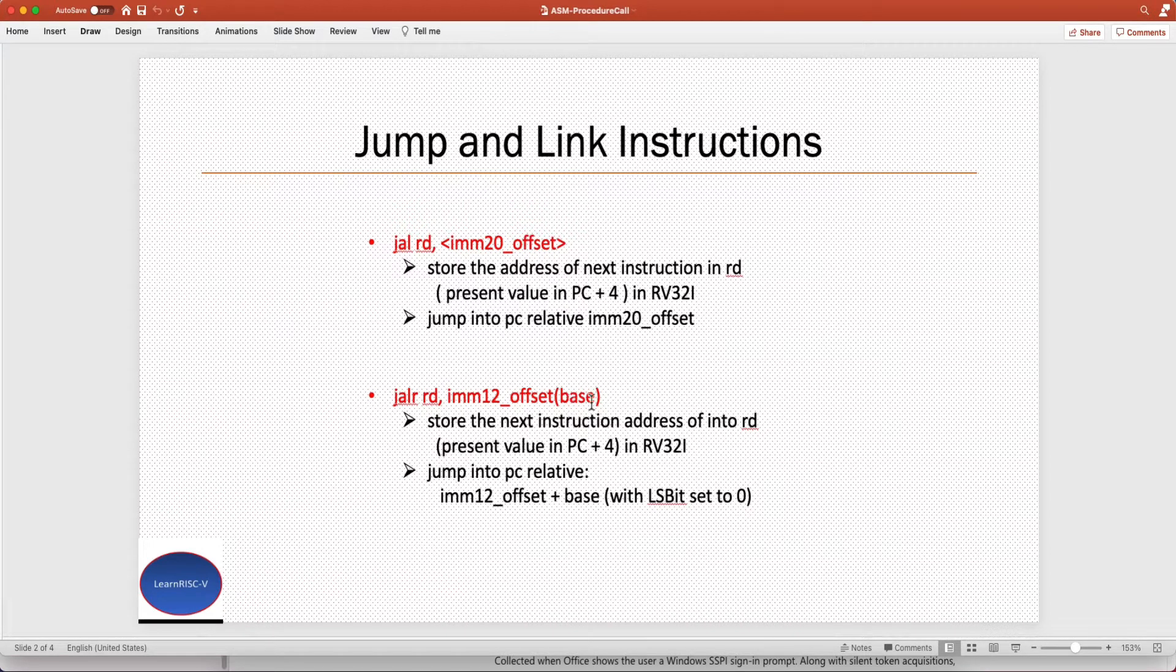The jump or the execution jumps into an address which is calculated by the value in the base register, and that's added with the immediate 12-bit offset which is specified here, and then that is added with the current PC value. So the execution always jumps into the PC relative address.